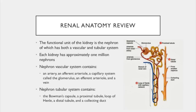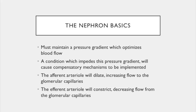Most of the absorption and/or excretion happens within the proximal tubule. The nephron must maintain a pressure gradient to optimize blood flow, and this gradient can change based on cardiac output, the types of drugs the patient is on, and the conditions the patient is in, such as sepsis or states of infection.